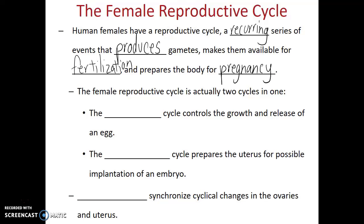The female reproductive cycle is actually two cycles in one. There is the ovarian cycle, which controls the growth and release of an egg cell within the ovaries. And there's also the menstrual cycle, which prepares the uterus for possible implantation of an embryo. These two cycles are synchronized by hormones produced both from the ovaries and from the woman's brain.